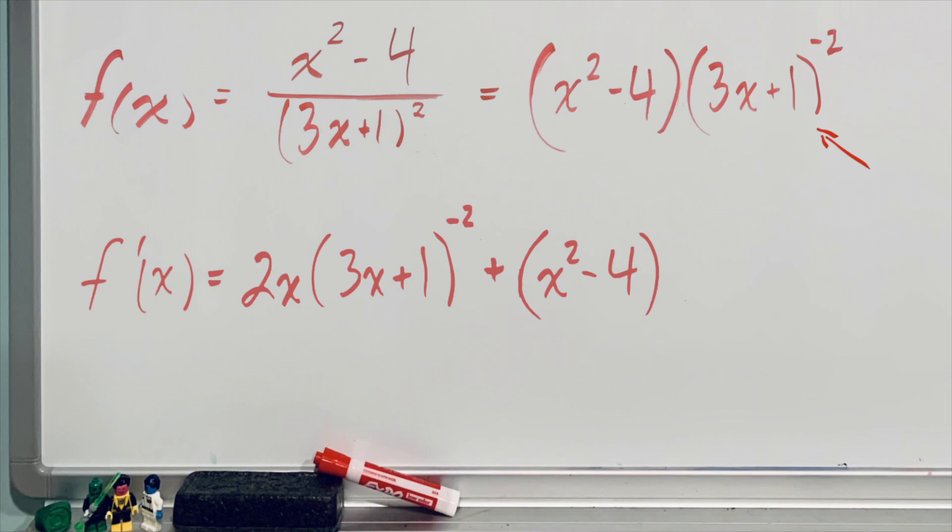in this case is a bit tricky, because we now have a chain rule situation. This is because there is an exponent on the outside of a set of brackets with a function on the inside.